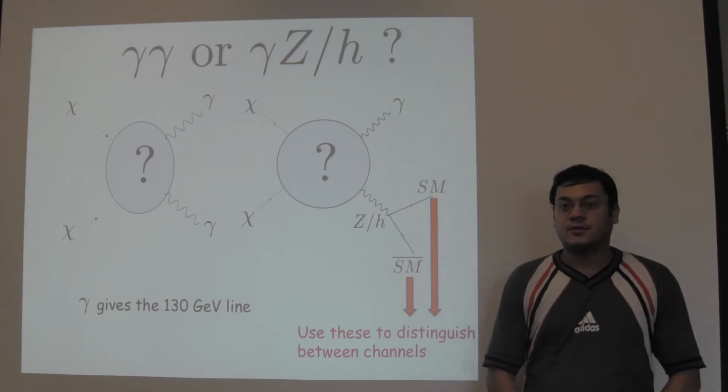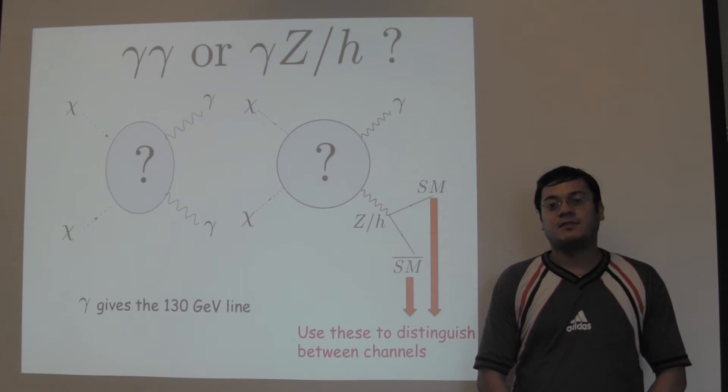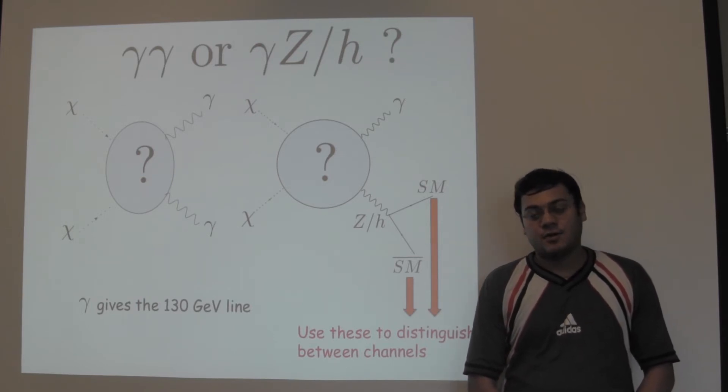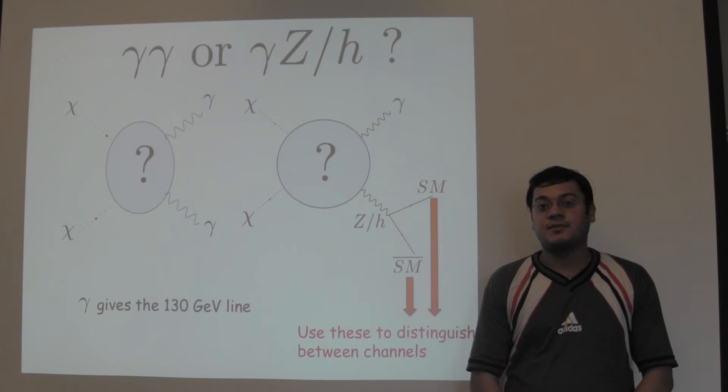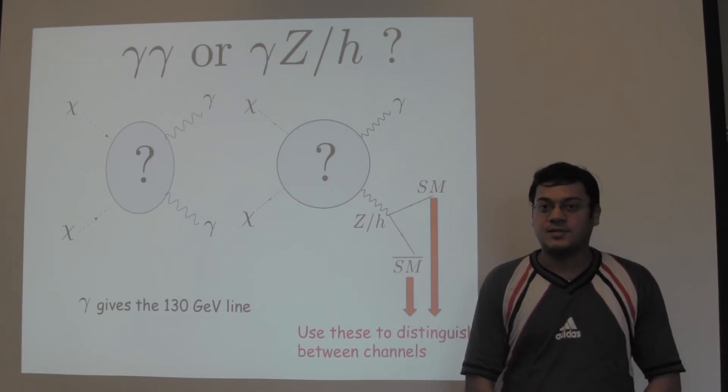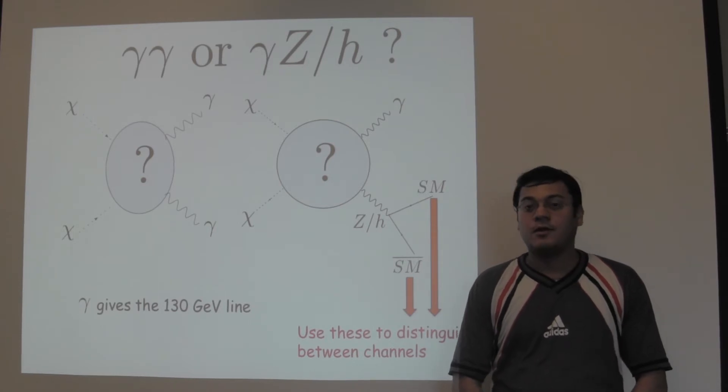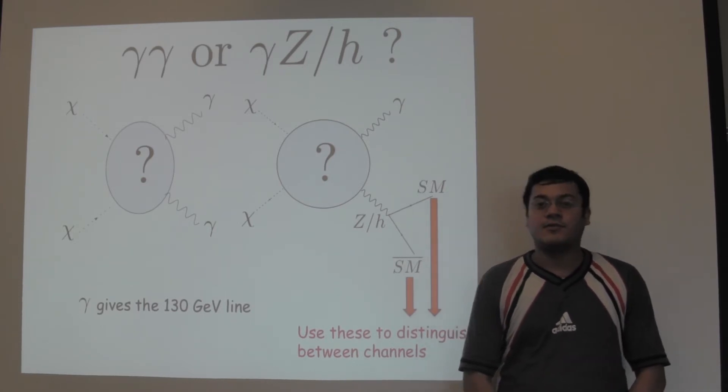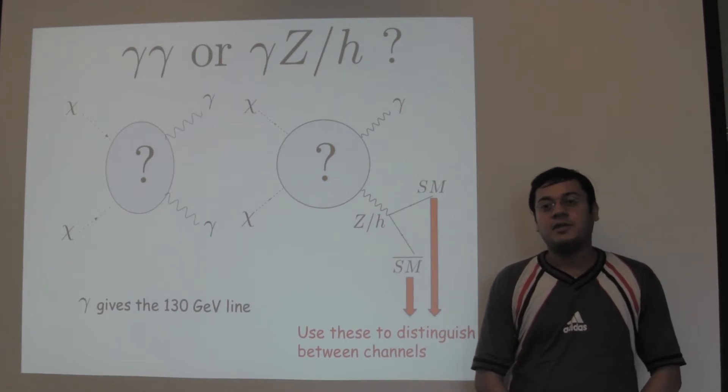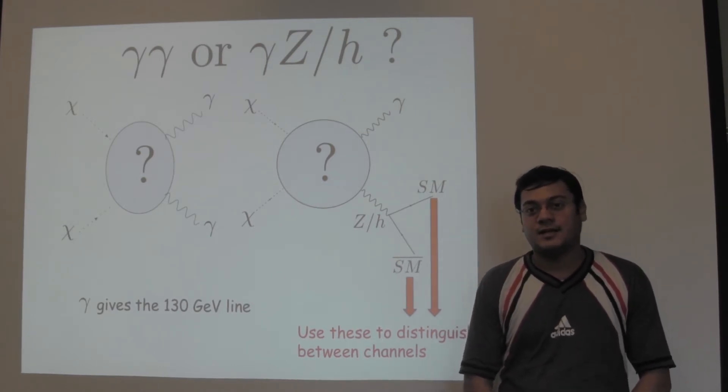We find synchrotron constraints from electrons and positrons coming from the decay of the Z and Higgs are very strong. In particular, we find that present radio constraints around the galactic center is in slight tension with the presence of this 130 GeV gamma ray line for a contracted NFW dark matter profile. We also find that the presently running new generation low frequency radio telescope LOFAR will be easily able to confirm or refute the presence of this line at the galactic center.